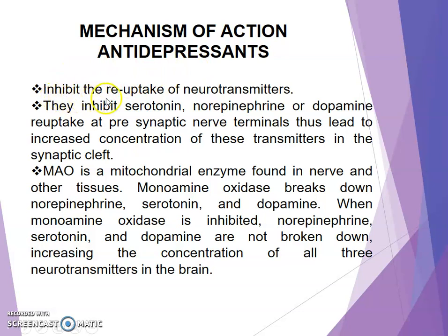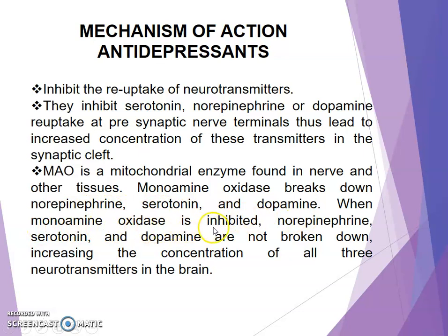Mechanism of action of antidepressants: they act by inhibiting the reuptake of neurotransmitters — serotonin, norepinephrine, or dopamine — at the presynaptic nerve terminal, thus leading to increased concentration of these transmitters in the synaptic cleft. Monoamine oxidase is a mitochondrial enzyme found in nerve and other tissues that breaks down norepinephrine, serotonin, and dopamine. When monoamine oxidase is inhibited, these neurotransmitters are not broken down, increasing their concentration in the brain.